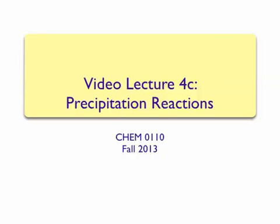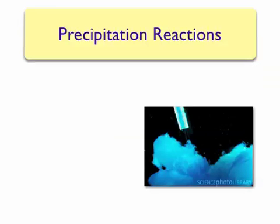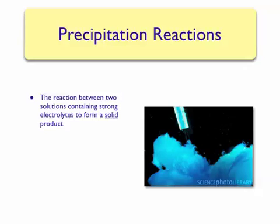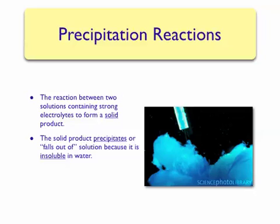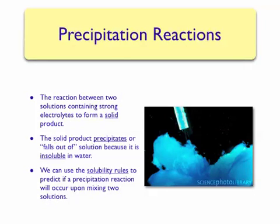Video Lecture 4C: Precipitation Reactions. A precipitation reaction occurs when two solutions containing strong electrolytes are mixed together, resulting in a solid product. This product precipitates or falls out of solution because it is insoluble in water. Therefore, the solubility rules are useful in predicting whether or not a precipitation reaction will occur when mixing two solutions.